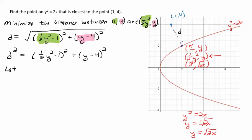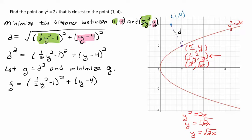Whatever the minimum value is for d squared, it would certainly be the minimum value for d. So I'm going to substitute some variable in there for d. I'm going to say, let g equal d squared and minimize g.